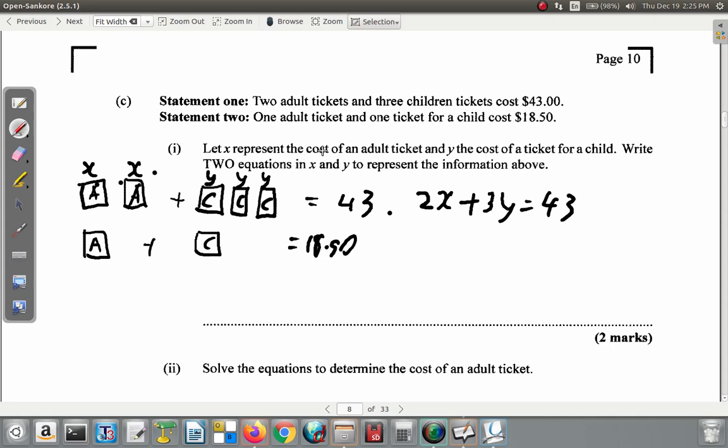Now, here. You have one adult ticket, so you must pay X dollars for it. You also need one child ticket. So you pay Y dollars for the child ticket. So you have one adult plus one child is $18.50. So you have one X, usually just leave out the one, plus one Y is $18.50.